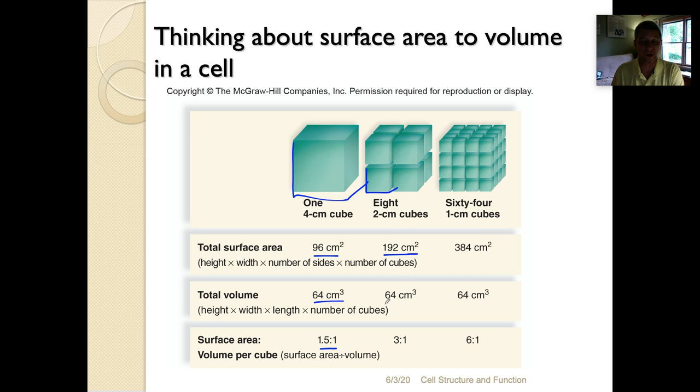If I do the same thing with each of the eight squares in this picture and cut them into eight cubes, I end up with 64 one-centimeter cubes. And now the total surface area becomes one times one times one times six is six, and six times 64 is 384 square centimeters. The volume is still 64. Now the surface area to volume ratio is now six to one. And so you can see that the smaller a cell is, the more efficient it can be at diffusion because it's got a much greater surface area to volume ratio.